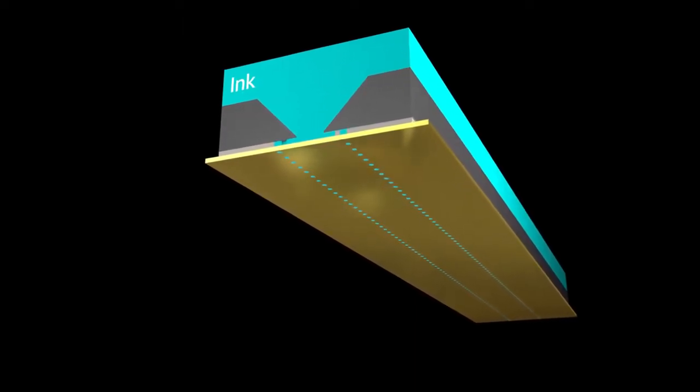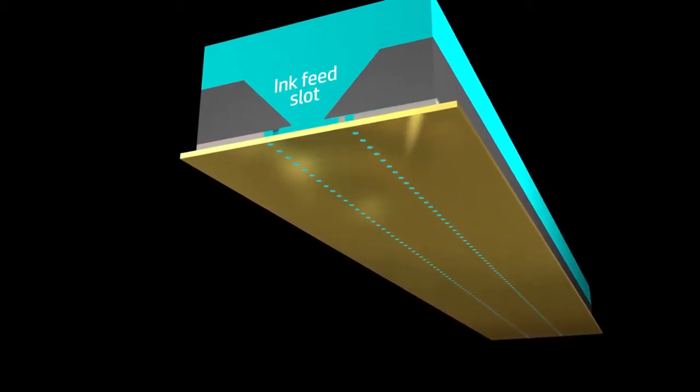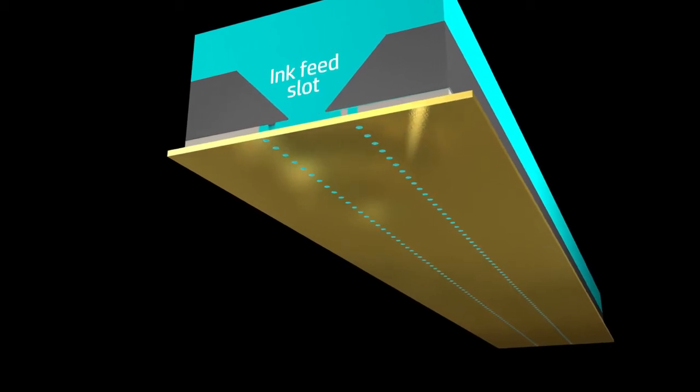The cyan region is filled with HP water-based ink. The wedge-shaped area is an ink feed slot cut through the silicon. It supplies ink to the nozzles.